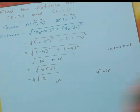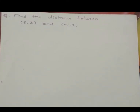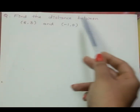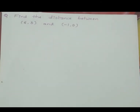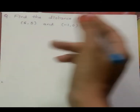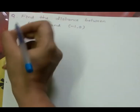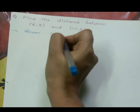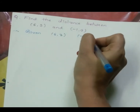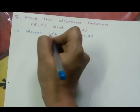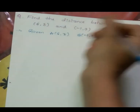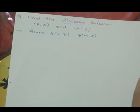Now let us solve one more example. The question is: find the distance between (6, 3) and (-1, 0). First we write the given points: (6, 3) and (-1, 0). We take the first point as A and the second as B. To solve the distance we have the formula.